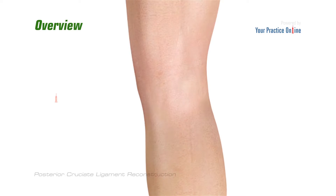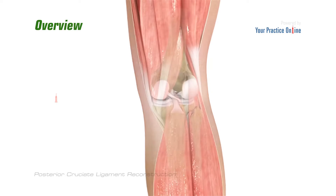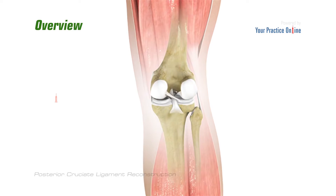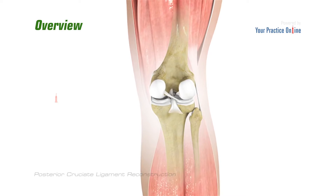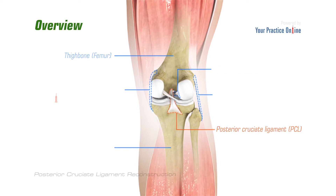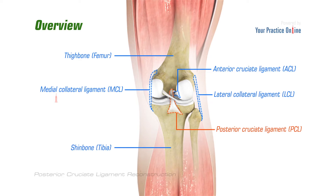The posterior cruciate ligament, or PCL, is one of four major ligaments of the knee and is situated at the back of the knee. It connects the thigh bone, or femur, to the shin bone, or tibia. The PCL limits the backward movement of the shin bone.